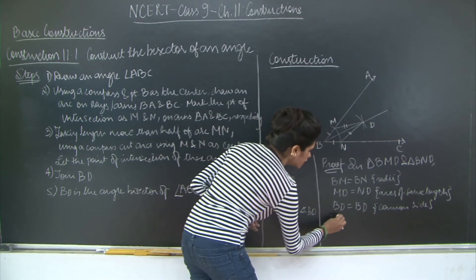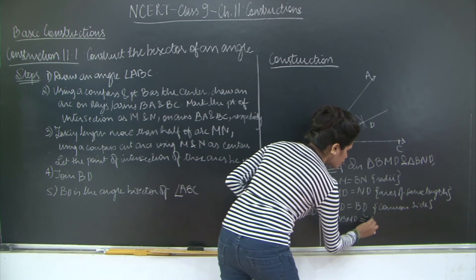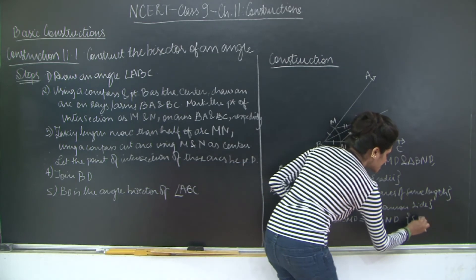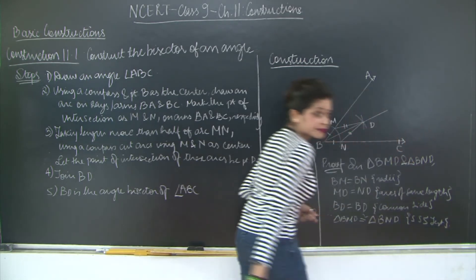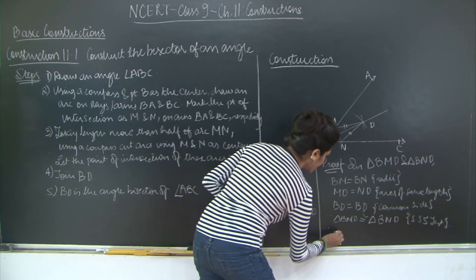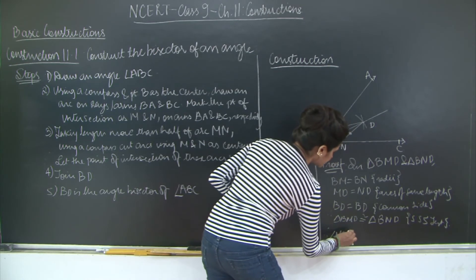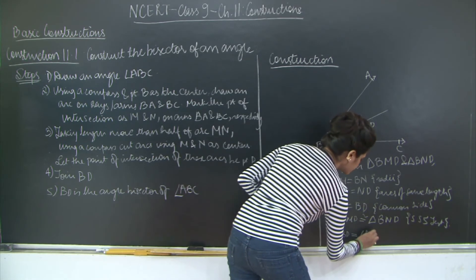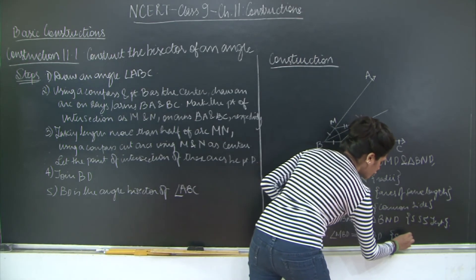Therefore triangle BMD is congruent to triangle BND by the side side side test of congruence. Therefore what can I say? Therefore angle MBD is equal to angle NBD through corresponding pair of congruent triangles.